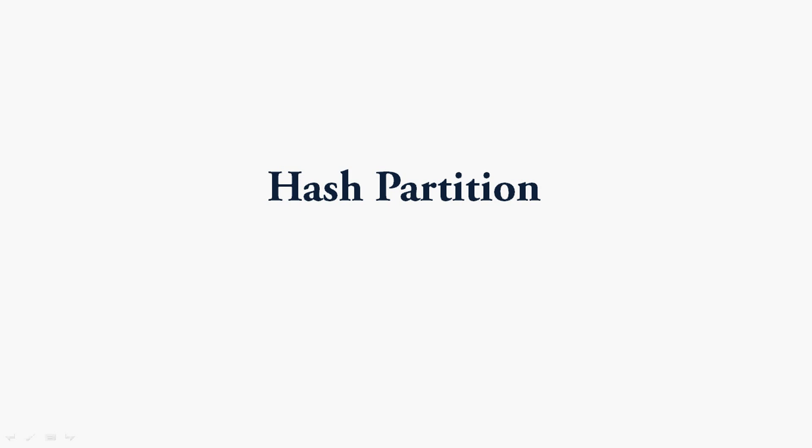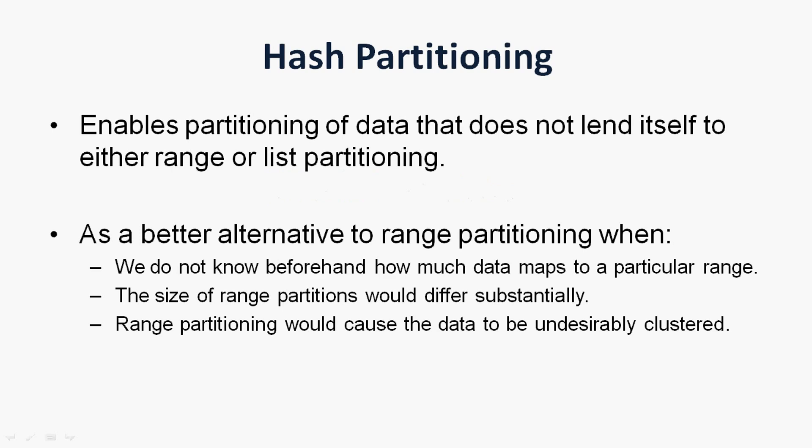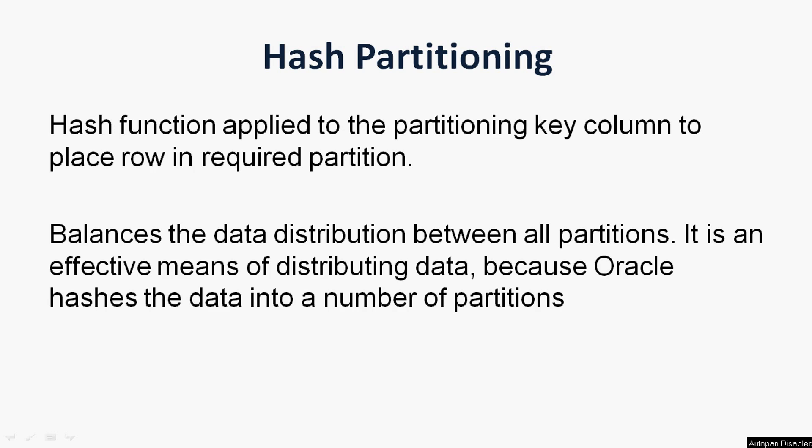Coming back to hash partitioning — this enables partitioning of data that does not lend itself to either range or list partitioning. It is a better alternative to range partitioning when we do not know beforehand how much data maps to a particular range, since the size of range partitions would differ substantially and cause data to be undesirably clustered.